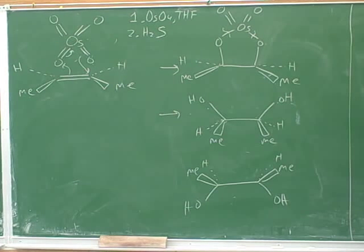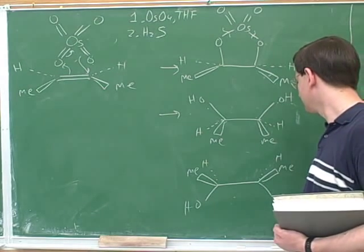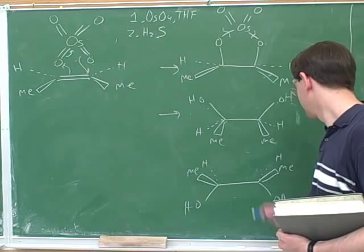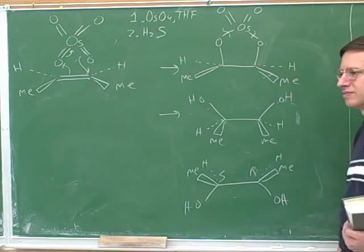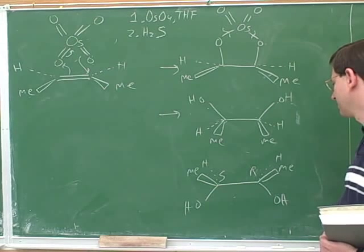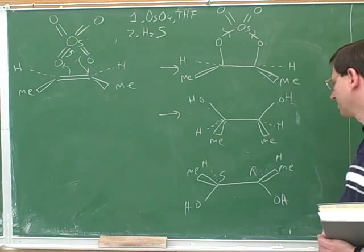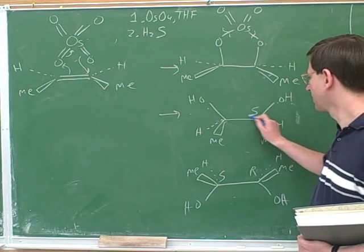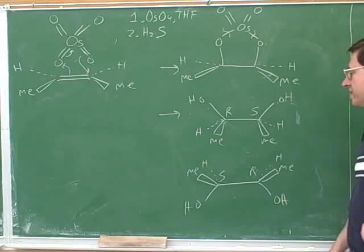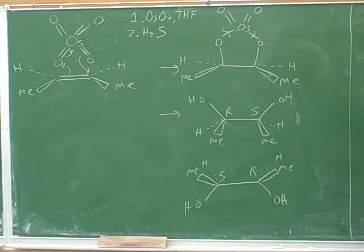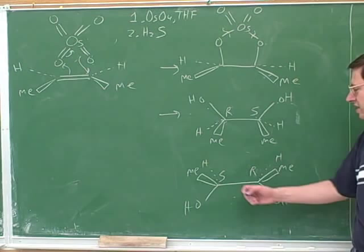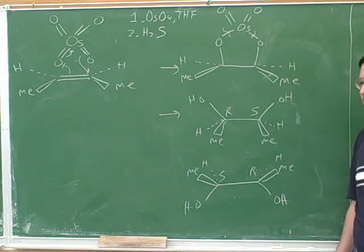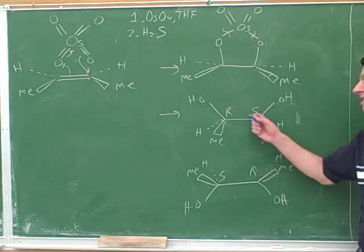On the bottom one, the right one is R, and the left one is S, and on the top one, the right one is S, and the left one is R. But you don't want to conclude from these that these are enantiomers. They could be the same meso compound. Is this compound meso? Yeah, that's actually meso. Yes, this is meso. So in fact, these are the same.